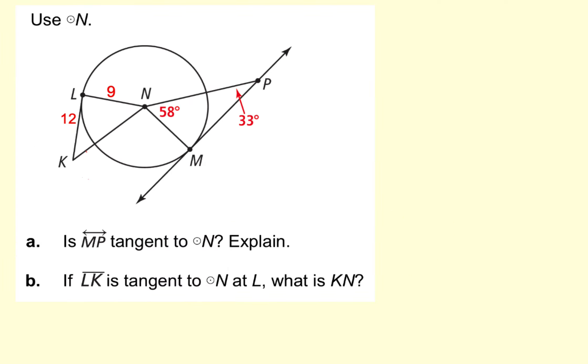Let's see if we can do this problem. It uses the theorem in two different directions. The question is, is this a tangent? The only way this would be a tangent is if we had a right angle. So I have two angles. I'm going to take 180 degrees and subtract 58 and 33. I'm going to get 89 degrees for this one.